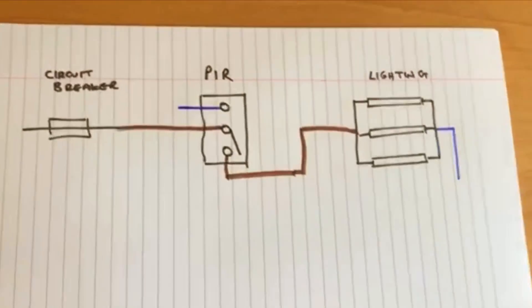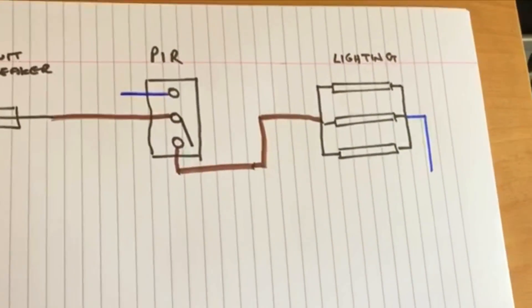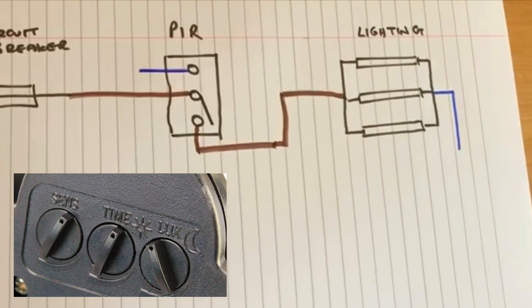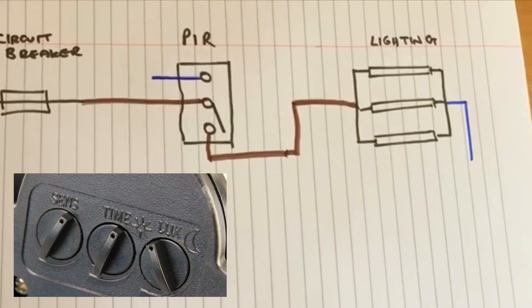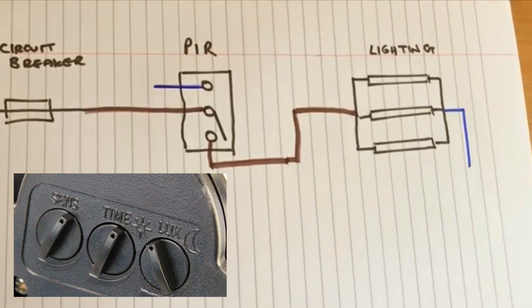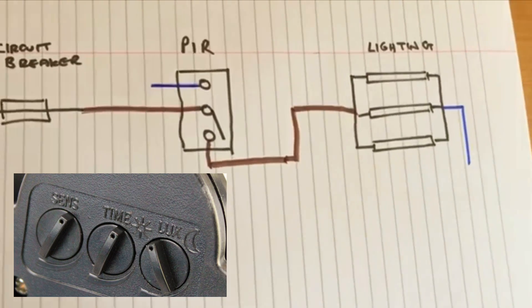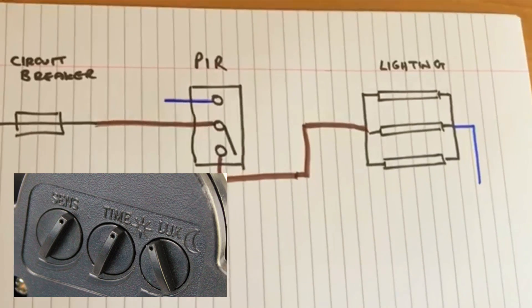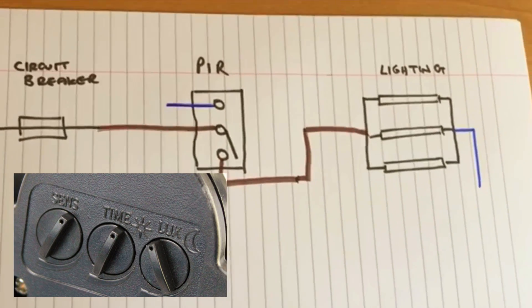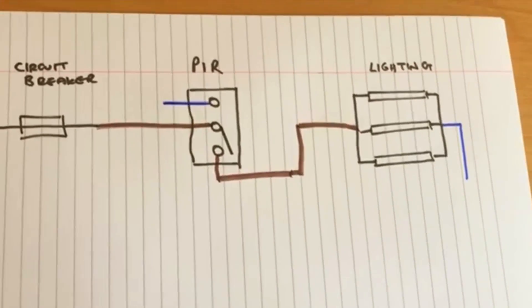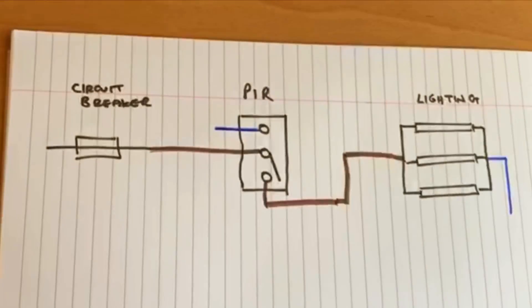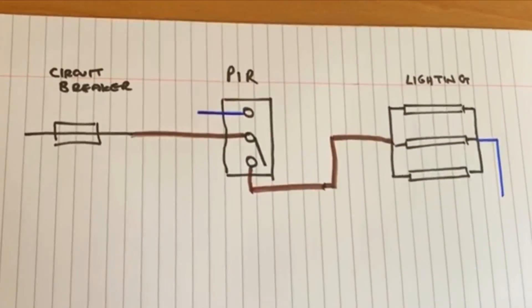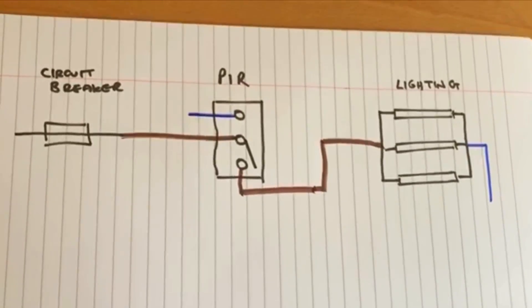PIRs also have a couple of controls on them. They have a time setting for how long they're going to stay on for, usually a minimum of maybe five seconds up to about a couple of minutes. They also have daylight and nighttime settings, but that's all relatively straightforward. The main thing for this video is just to understand the basic wiring for it, and as you can see, you don't get too much more basic than what this is.